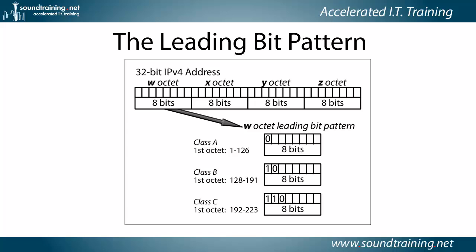For a class B, the first two bits are always 1, 0, which mathematically gives a first octet value of 128 through 191 inclusive. And for a class C, the first three bits are always 1, 1, 0, which gives a first octet value of 192 to 223 inclusive.